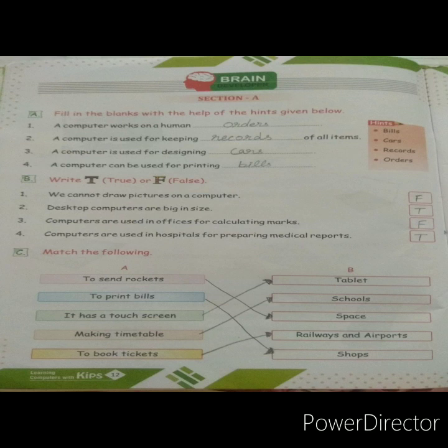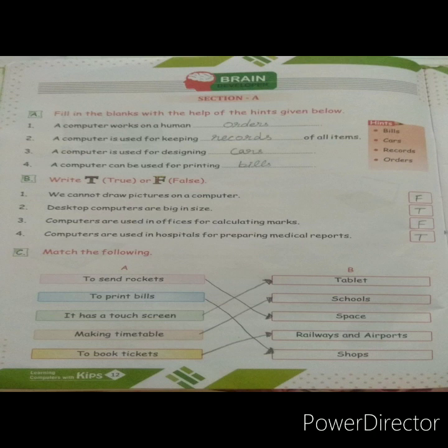Question C: Match the following. You have to match column A with column B. 'To send rockets' is matched with 'space'. 'To print bills' is matched with 'shops', because bills are printed at shops. 'It has a touch screen' is matched with 'tablet'. 'Making timetable' — where do we use a computer for making timetables? At schools. 'To book tickets' is matched with 'railway station or airport'.